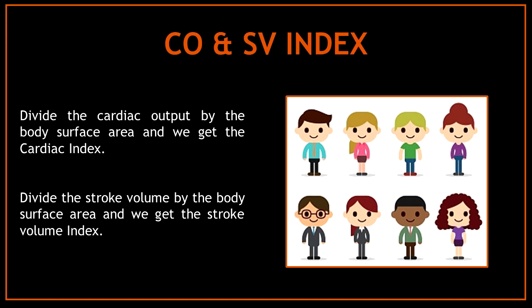Now that you know how to obtain the cardiac output and stroke volume, you can also calculate the cardiac index and stroke volume index. If you divide the cardiac output by the body surface area, you will get the cardiac index. If you divide the stroke volume by the body surface area, you will get the stroke volume index.